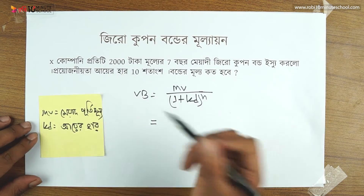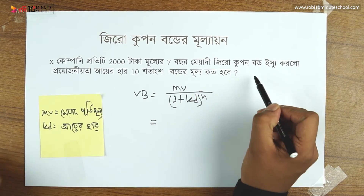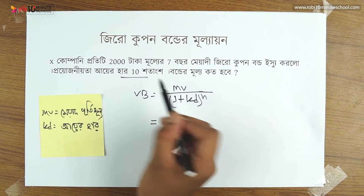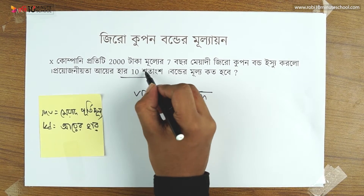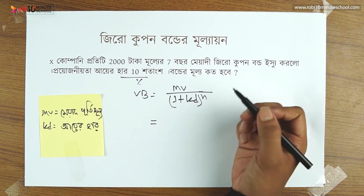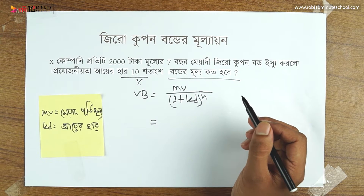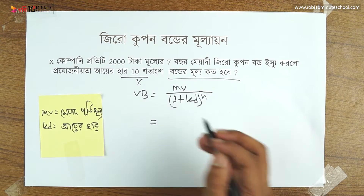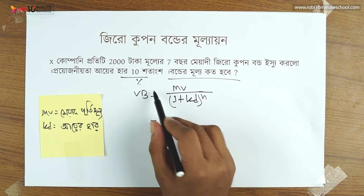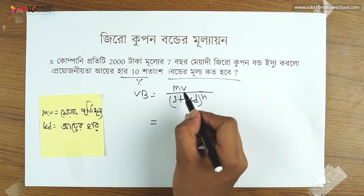Just to ask something about this, we can ask ourselves — we have a question. They are the question. This is the question. We've given that we have an equation: 1 plus KD to the power N.